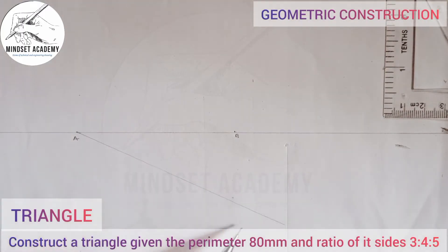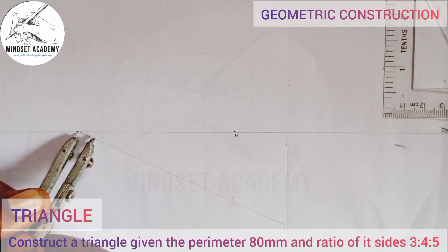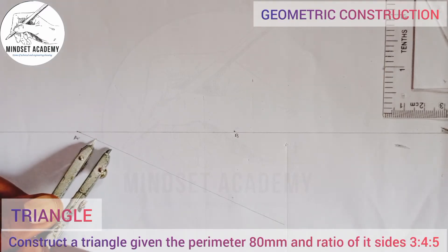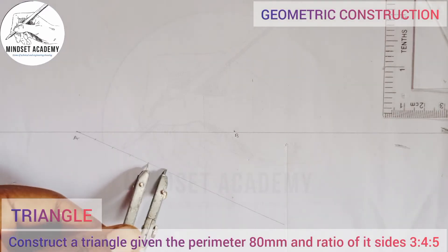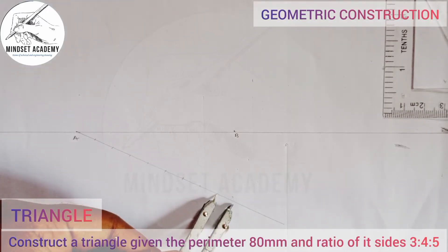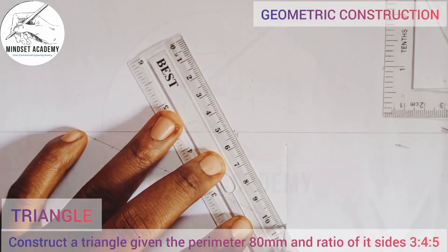With the help of your compass, place it here at any given radius and mark the divisions: 1, 2, 3, 4, 5, 6, 7, 8, 9, 10, 11, 12. Now join the last point here to point B.